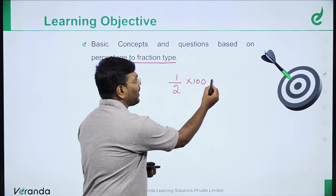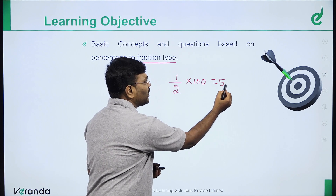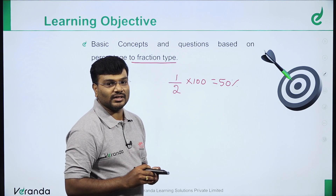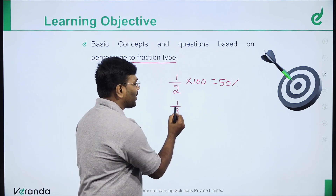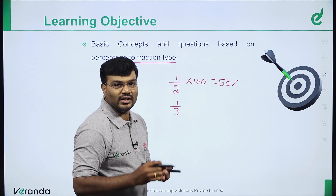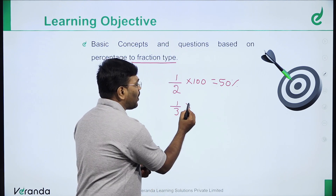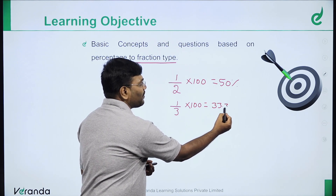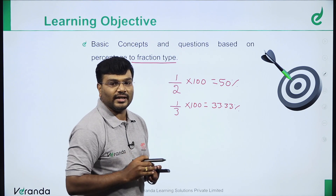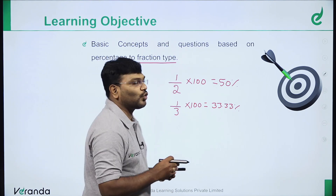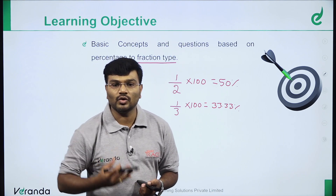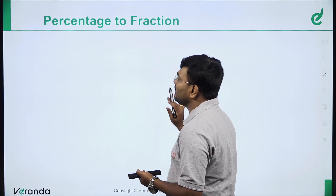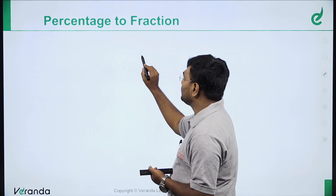1 by 2 multiplied by 100 gives 50%. So 1 by 2 equals 50%. For 1 by 3, multiply by 100: 1 by 3 into 100 gives 33.33%. So 1 by 3 equals 33.33%.